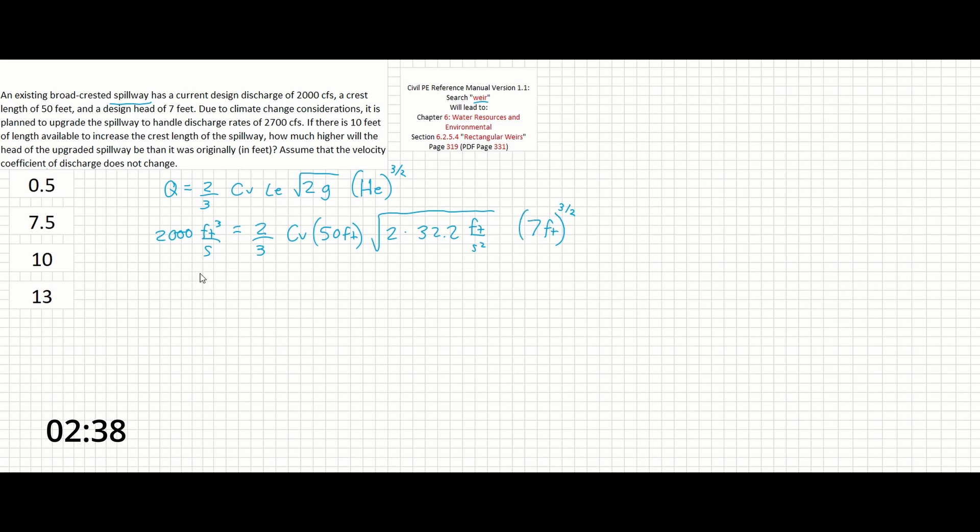So if we isolate CV right now, what we can do is multiply by 3 across the equal sign, then divide by all of the other terms. So 2, 50, this quantity, and the value that comes out of 7 raised to the 3 over 2. And that should get you a CV of 0.4.